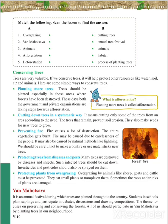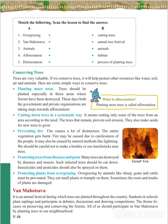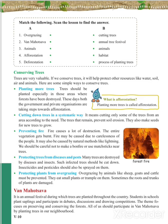Van Mahotsav is an annual festival during which trees are planted. Thousands of trees are planted every year on this day. Many schools take part by planting trees or saplings and by participating in debates, discussions, and drawing competitions. This provides basic information about trees and how trees are useful for us. It also helps to conserve the forest, and all of us should participate.